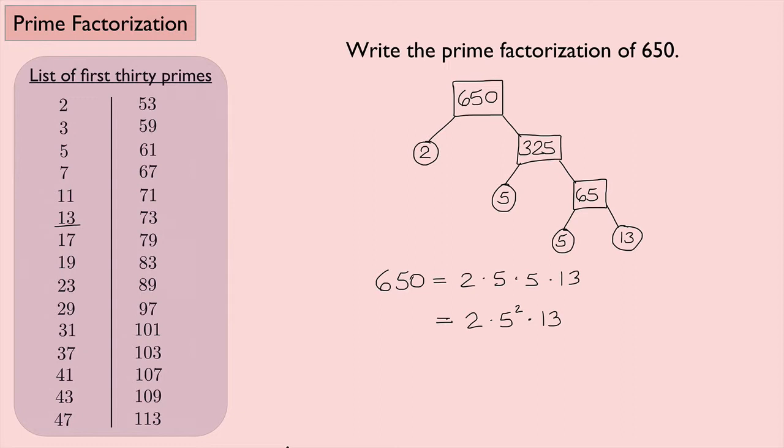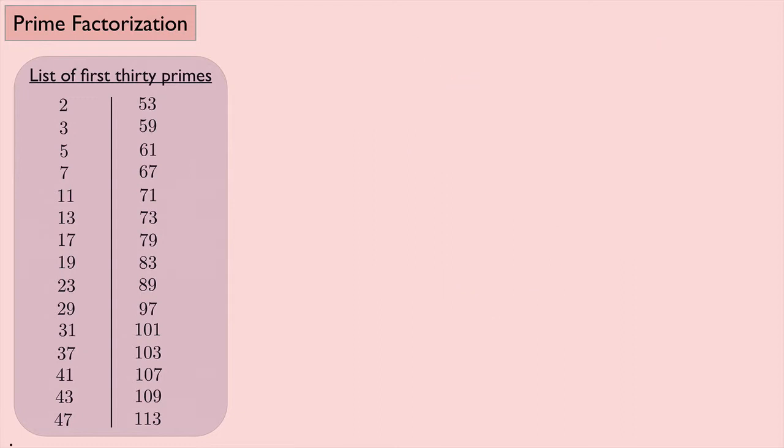Let's look at another example. Let's look at the prime factorization of 3,382. Okay, this is a really big number. That's okay. We're going to start by putting 3,382 inside of a box here. And if you need to use a calculator for some of the larger numbers, that's fine. This is an even number, so we know it's divisible by 2. So what goes here? Well, it turns out that this is 1,691, if you divide that in half. 1,691.